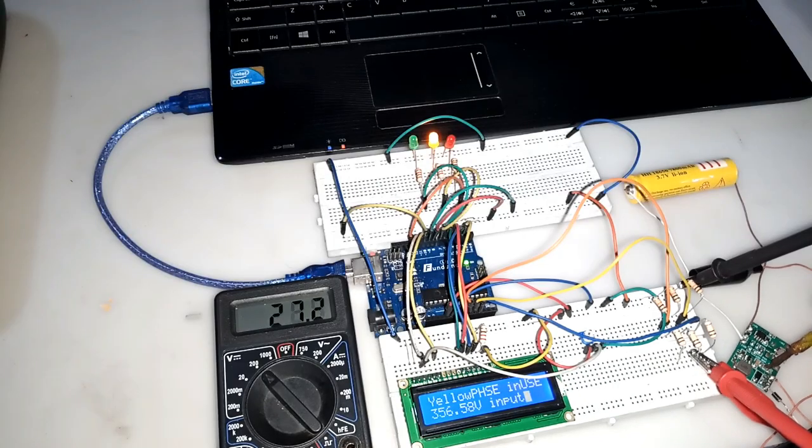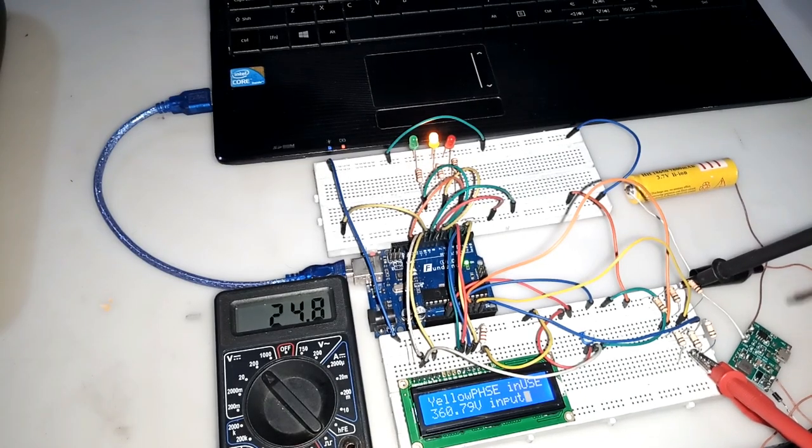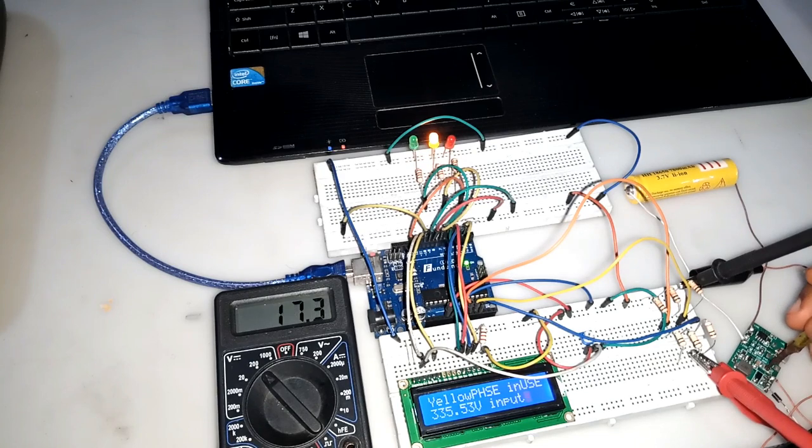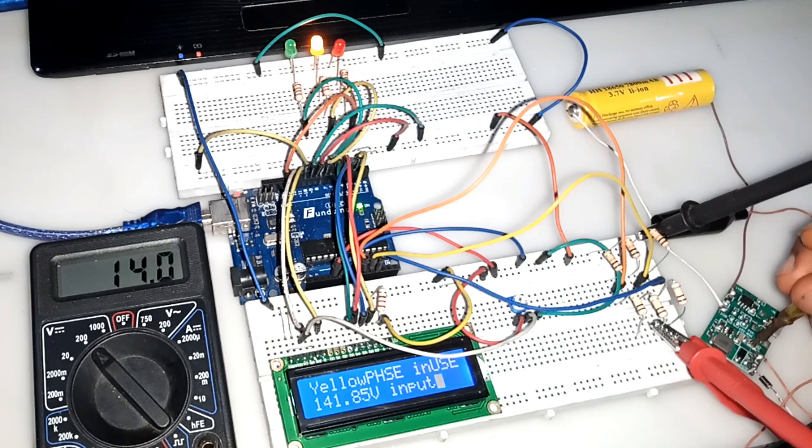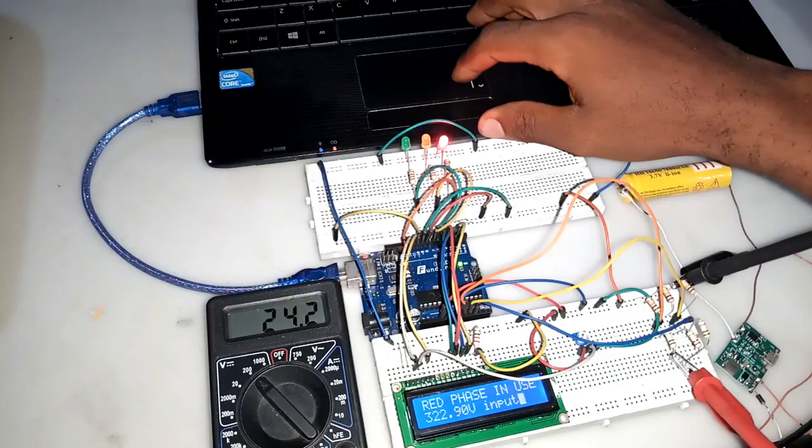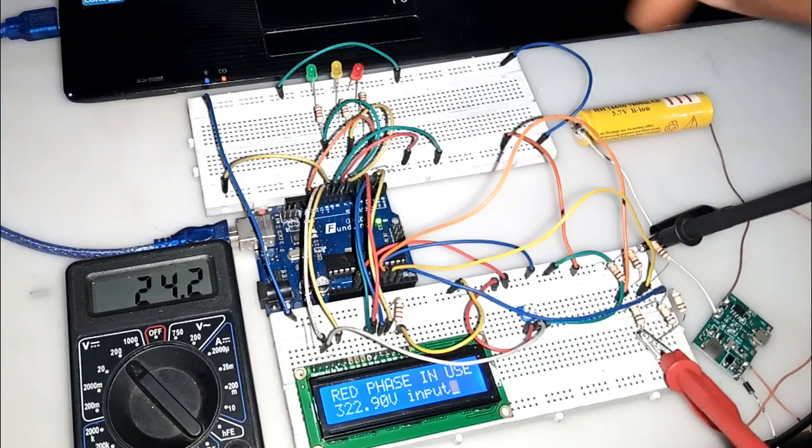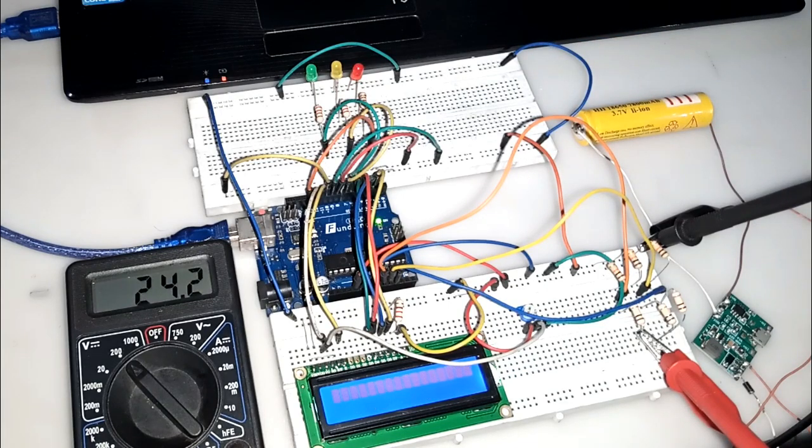As you can see, the DC output voltage from the boost converter module which is displayed on the multimeter is different from the relative AC voltage shown on the LCD display. And of course, this result corresponds to the lines of code we programmed into the system.